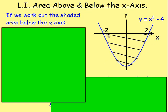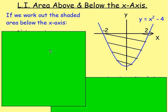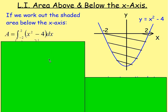So we've got this curve here, y equals x squared minus 4. And if we want to work out the shaded area, what would you use? Integration! Yes, so you would integrate. We are going to integrate that. The limits are going to be 2 and negative 2 — 2 being the upper limit, negative 2 being the lower limit.